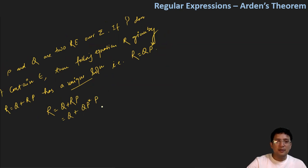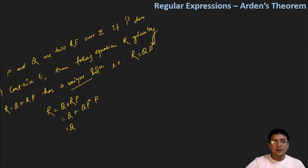p is already there. So replacing r gives qp* followed by p. Now, if I take q as the common factor, at this place in mathematics we would write 1, but in regular expressions we write epsilon plus p* times p.